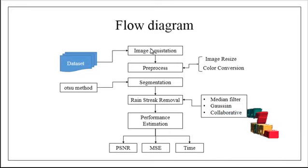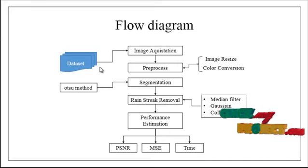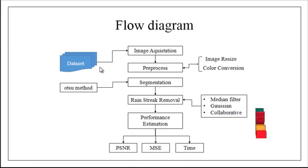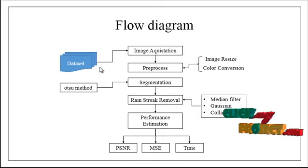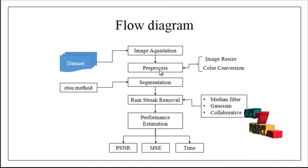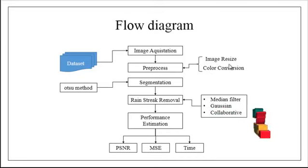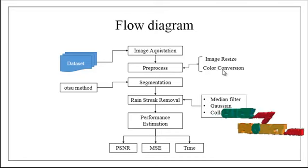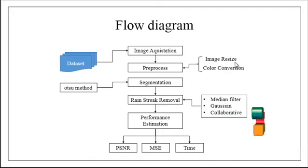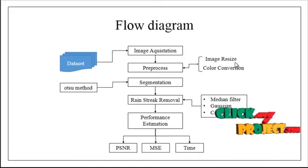First, in image acquisition, the input image is taken from the dataset. In this dataset, there are several rain streak images. After getting an image from the dataset, we move on to the second stage: preprocessing. In preprocessing, we have two steps — image resize and color conversion. In resize, we change the dimension of the rows and columns to resize the image to a specific aspect ratio.